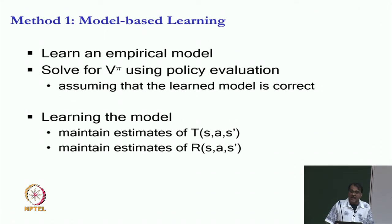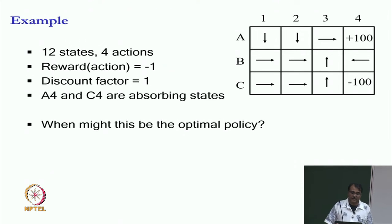And then after you have given certain estimates, you just use the equations for v pi, which are the system of linear equations that we did in the last week. And then you plug in T hat and r hat, which are the estimated versions. And then let us take a very simple example. This is the example that we will work with for the first few slides. So let us say I have this grid world, I have 12 states and 4 possible actions up down left right. My reward of every action is minus 1 except when I reach A4 or C4, when I reach A4, I get a reward of 100, I stop when I get C4, I get a reward of minus 100, I stop. So these are absorbing states, discount factor is 1.